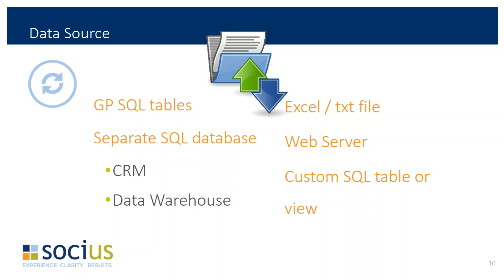The next decision factor is data sources. We've got to determine what the source of that data is going to be. Examples include GP SQL tables, different SQL databases, CRM, a data warehouse, custom tables or SQL views, web servers, and Excel files. There are a lot of different sources of data that we need to take into account when trying to figure out the tool to use.